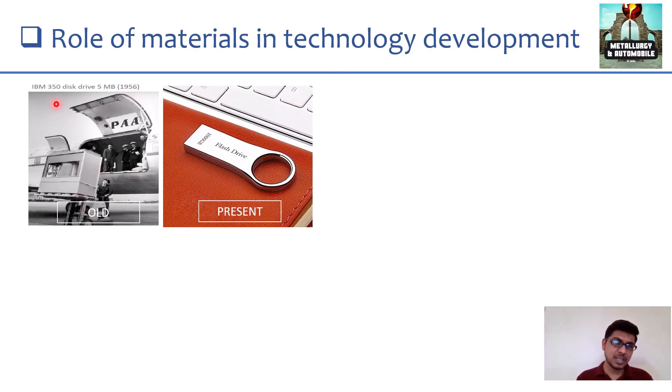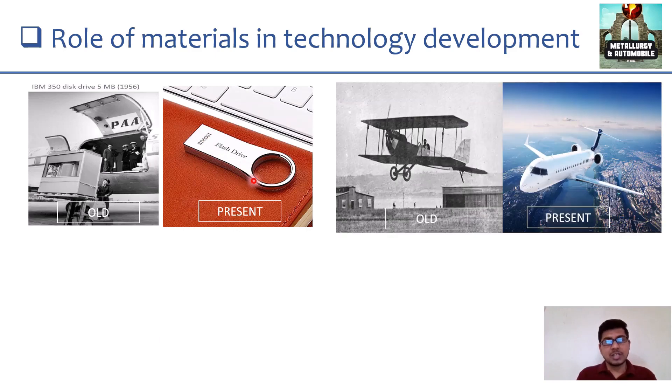in 1956, IBM had developed a hard disk which is 350, which is 5 MB. You see the size here. To store the 5 MB of data, that time this is the material we were using. And now, as you see, 100 GB of data can be saved in very, this much small pen drive. This can be possible when the material is developed, that is possible.